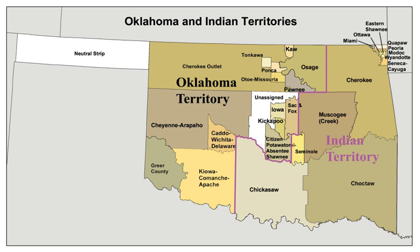As general terms, Indian Territory, the Indian Territories, or Indian Country describe an evolving land area set aside by the United States government for the relocation of Native Americans who held Aboriginal title to their land. In general, the tribes ceded land they occupied in exchange for land grants in 1803. The concept of an Indian Territory was an outcome of the 18th and 19th century policy of Indian removal.